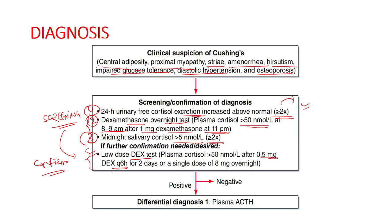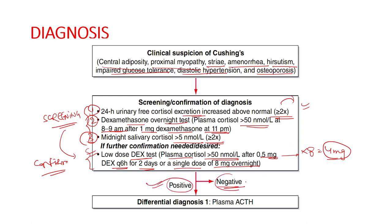The confirmatory test is the low-dose dexamethasone suppression test: 0.5 mg dexamethasone every 6 hours for 2 days (total 8 doses = 4 mg). Alternatively, a single overnight dose of 8 mg can be given. If plasma cortisol the next morning is still above 50 nmol/L, Cushing syndrome is confirmed. If negative, Cushing syndrome is excluded.